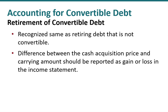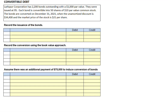Let's take a look at an example. The Larkspur Corporation has 2,200 bonds outstanding with a $1,000 par value, and they were issued at $95. Each bond is convertible into 50 shares of $10 par value common stock. The bonds are converted on December 31, 2021, when the unamortized discount is $34,400 and the market price of the stock is $21 per share. The market price of the stock doesn't matter to the corporation — it does matter to the bondholders, who won't convert their debt unless they receive more in equity than they give up in par value of their bonds.